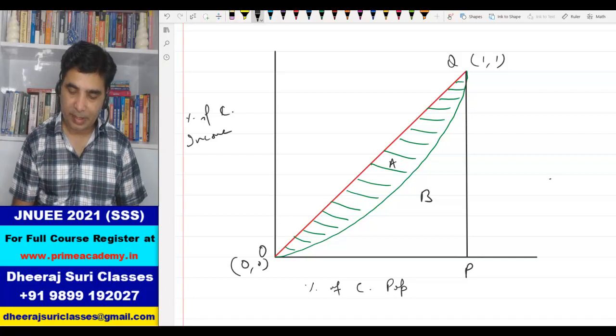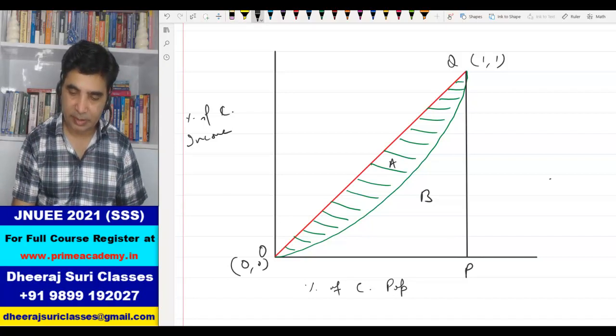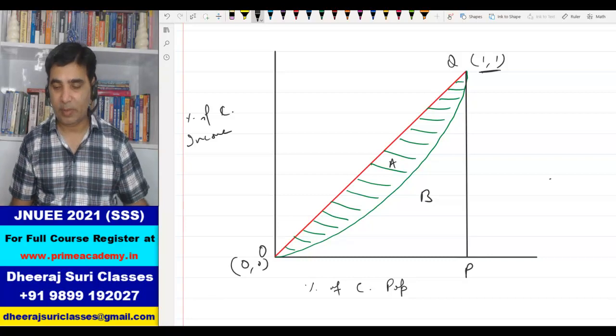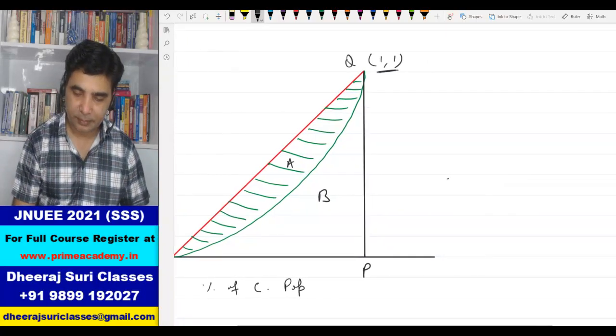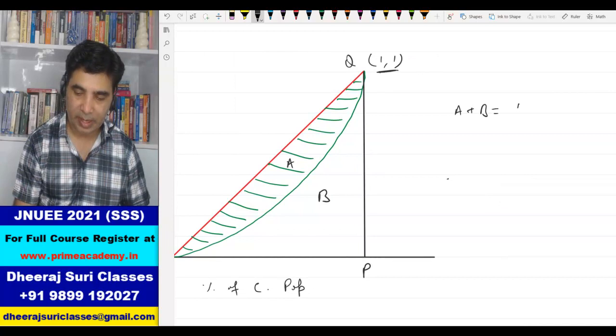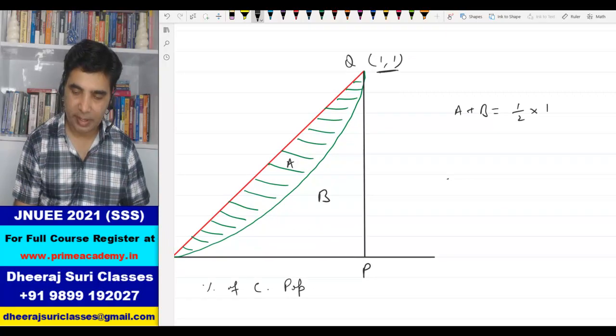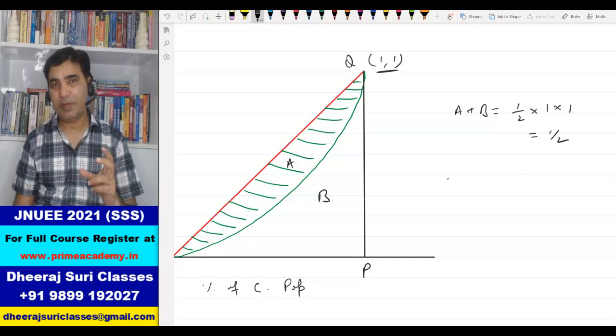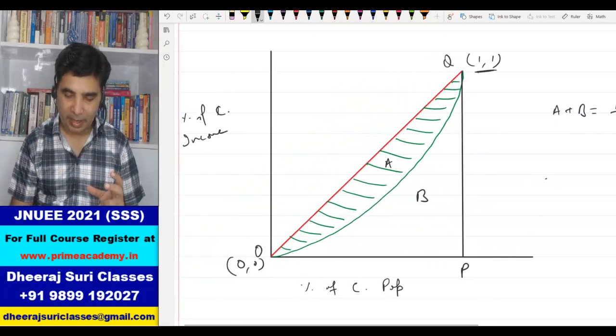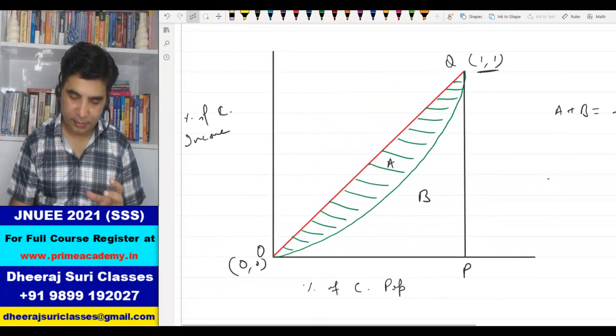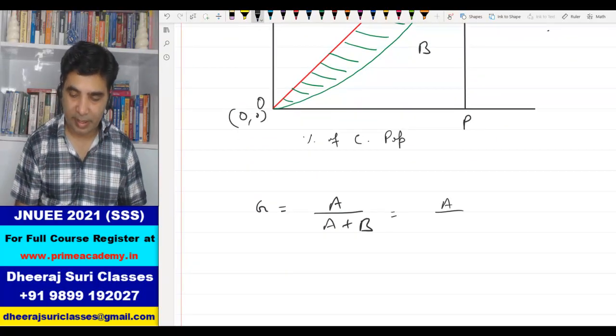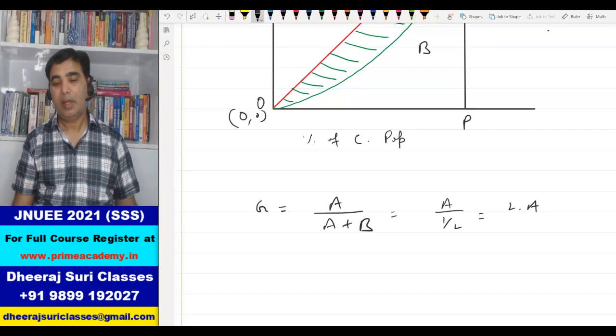How do you find area of triangle O, P, Q? It is a right angle triangle and because this is 1,1, its base is 1 and height is 1. So area of triangle O, P, Q, region A plus B is half into base into height which is 1 by 2. As I mentioned, Gini coefficient is A by A plus B, and A plus B is half. So Gini coefficient is A by half means twice of A.